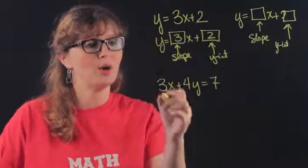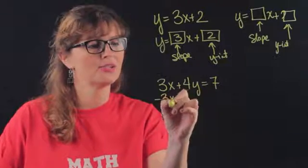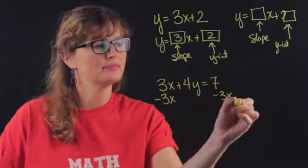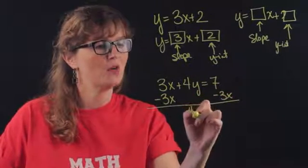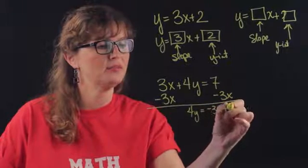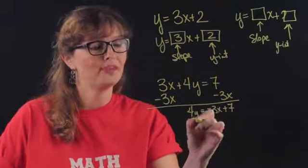So we need to solve for y, so I can subtract 3x from both sides. So I have 4y is negative 3x plus 7 and divide by 4.